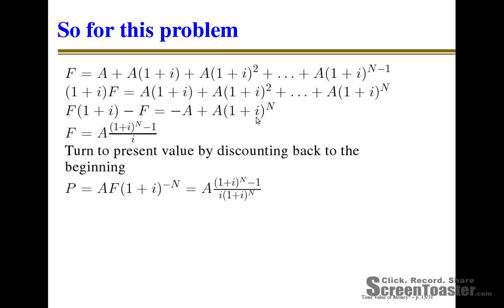We'll be starting with the constant series right here. What we have on this top line is an equation that will give you the future value of a constant series of payments via the brute force method. This is the deposit made in time period N, equal to whatever you deposited — so this is that $10 in time period 5.